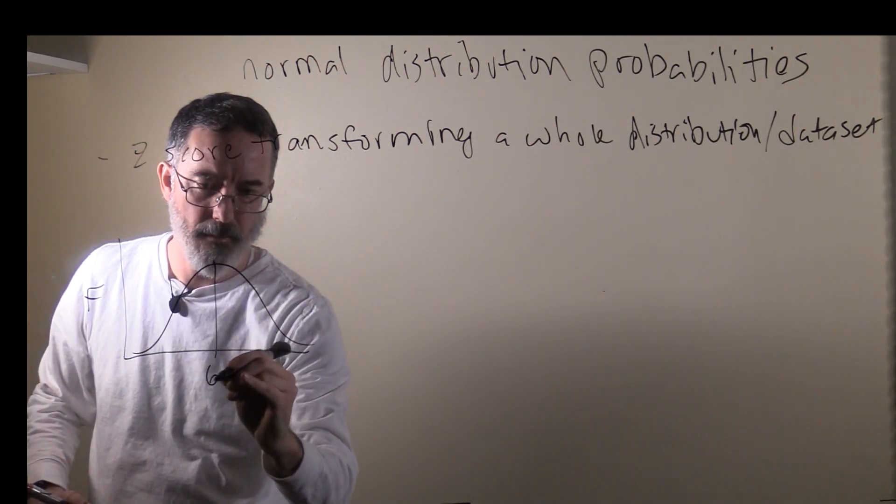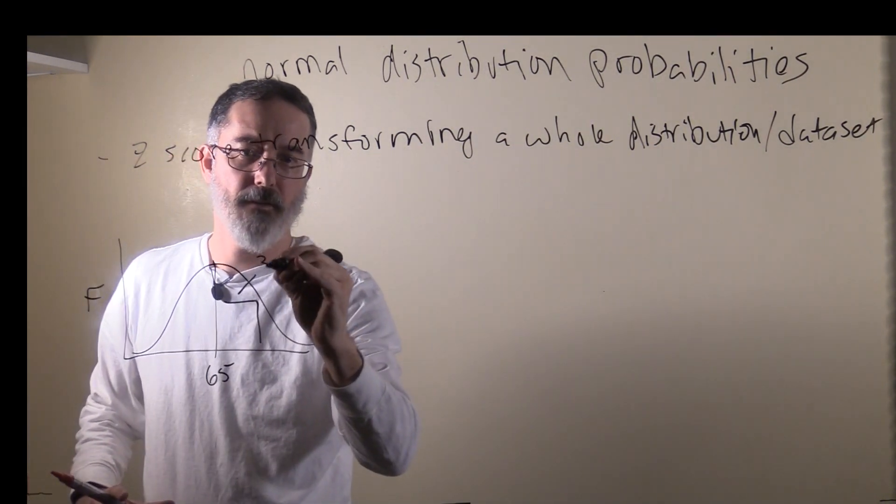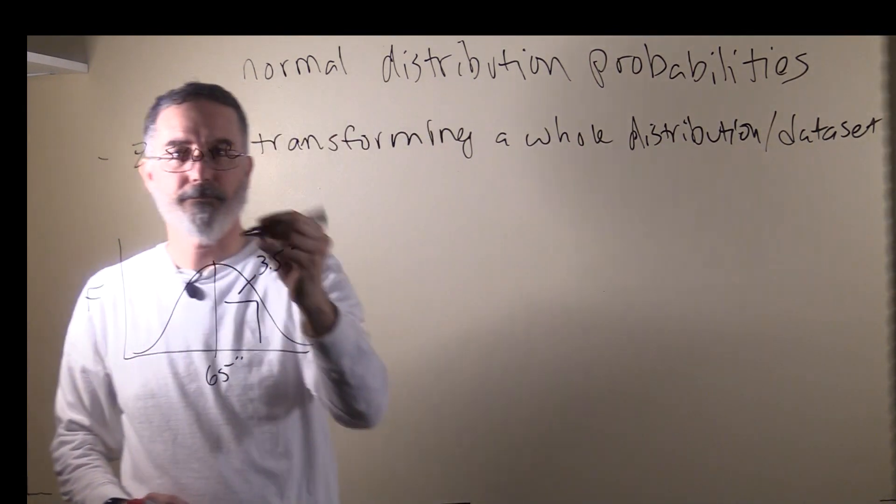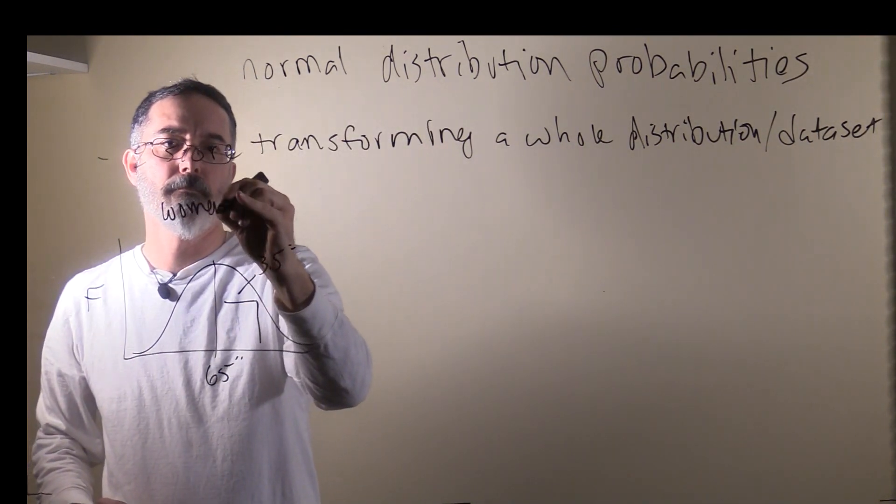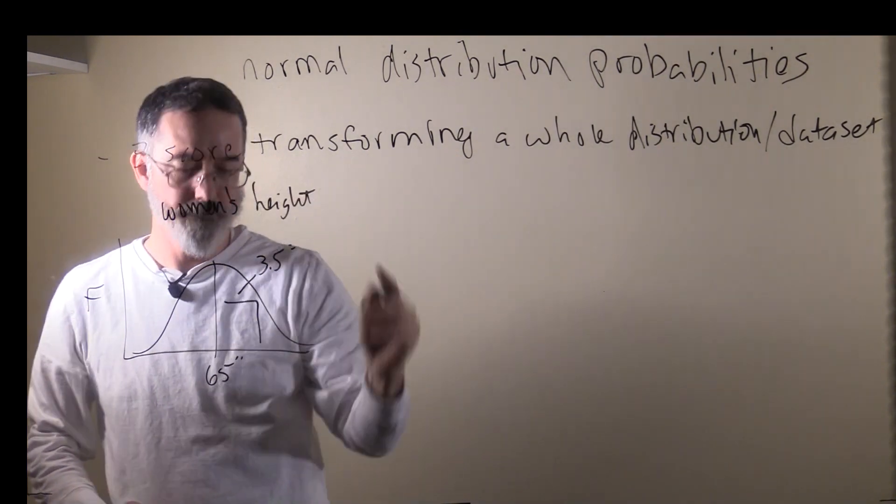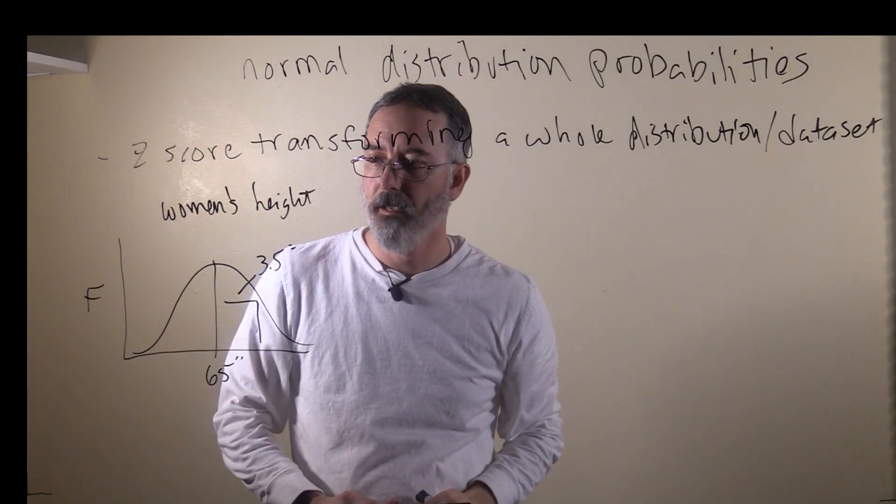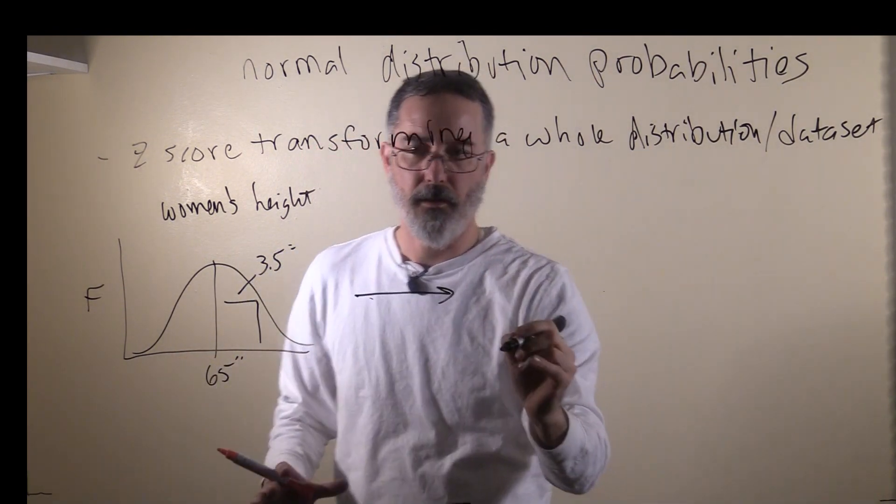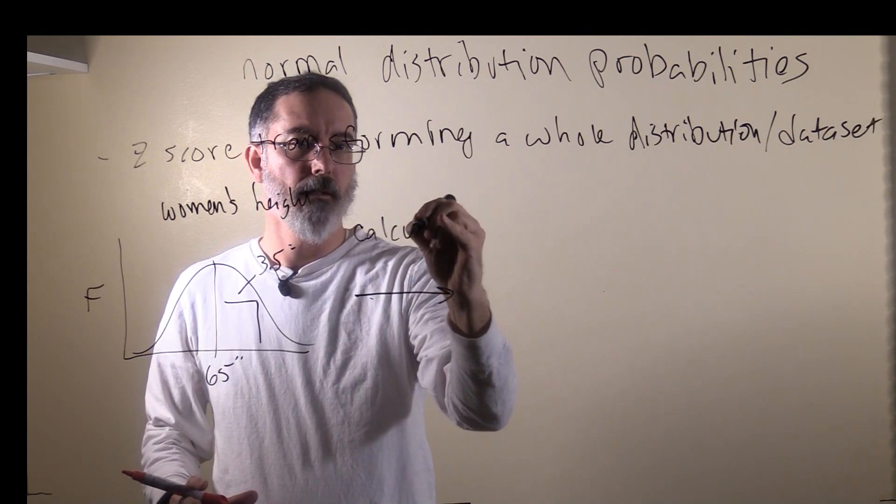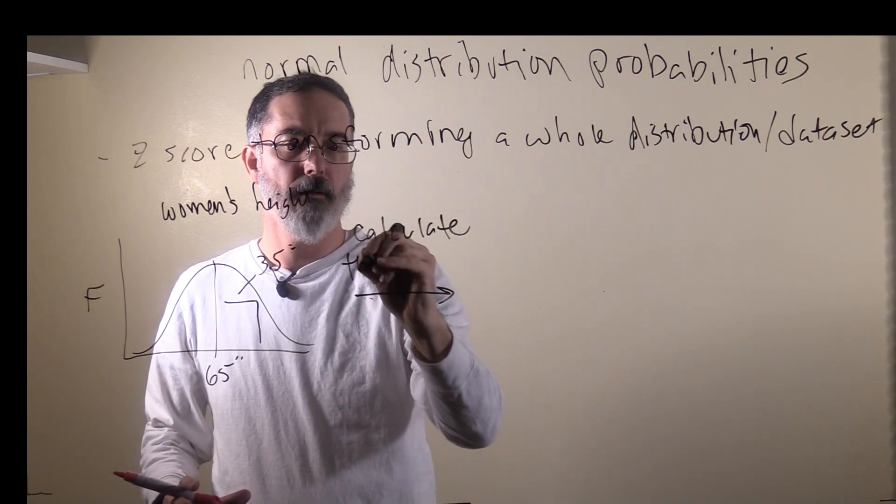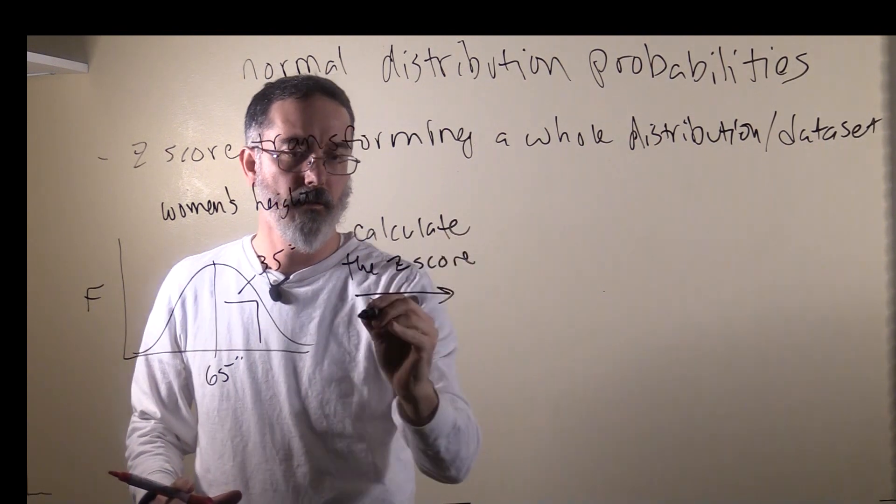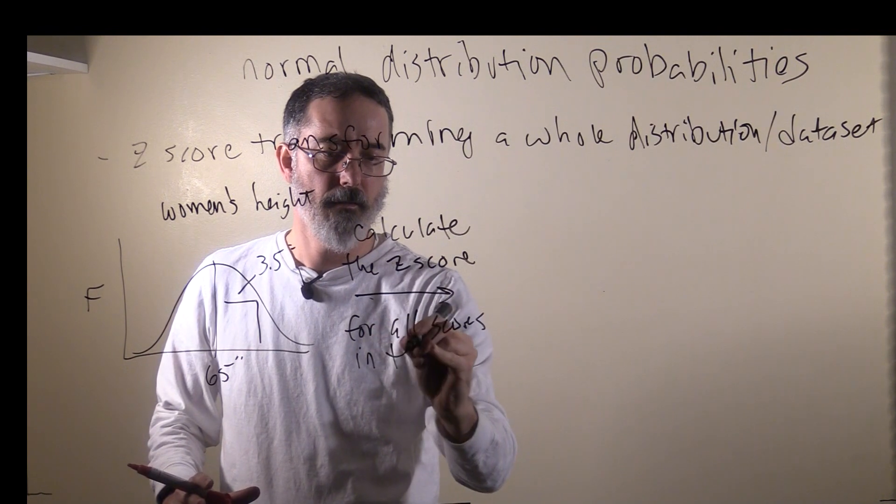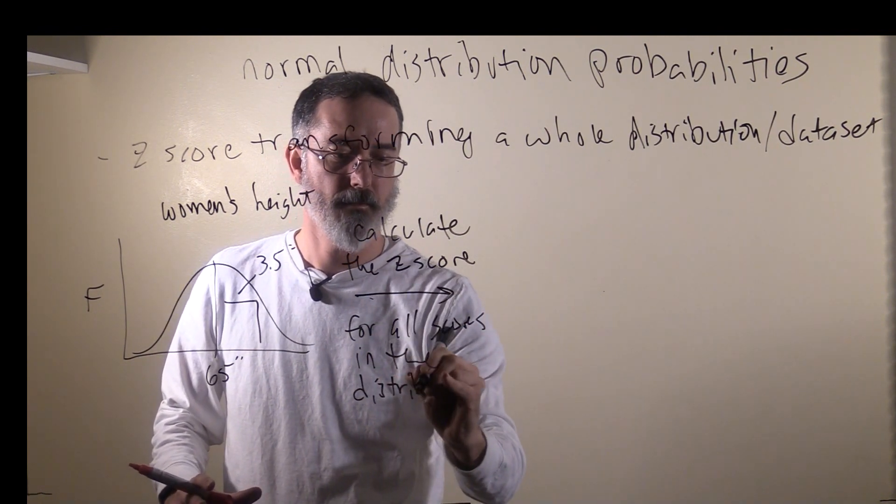We know that the mean is 65, standard deviation is 3.5, and these are inches. This is women's height. What we're going to do is z-score transform this distribution. To do that, we're going to calculate the z-score for all scores in the distribution.